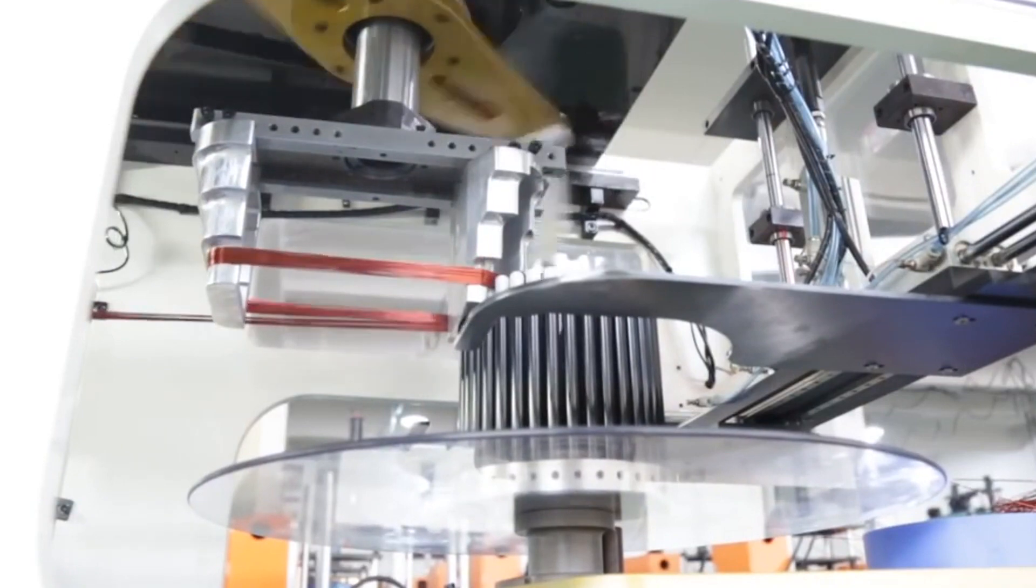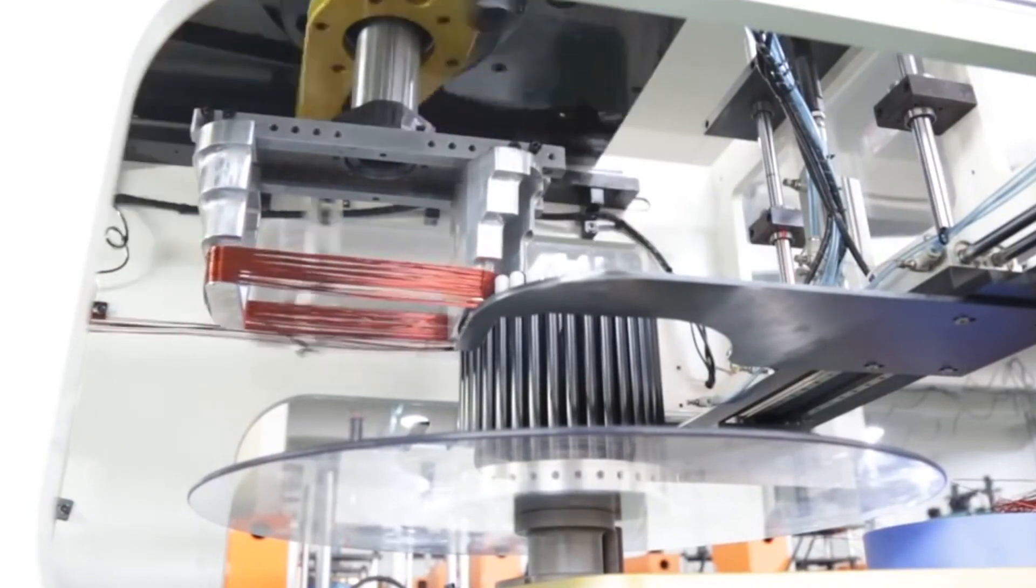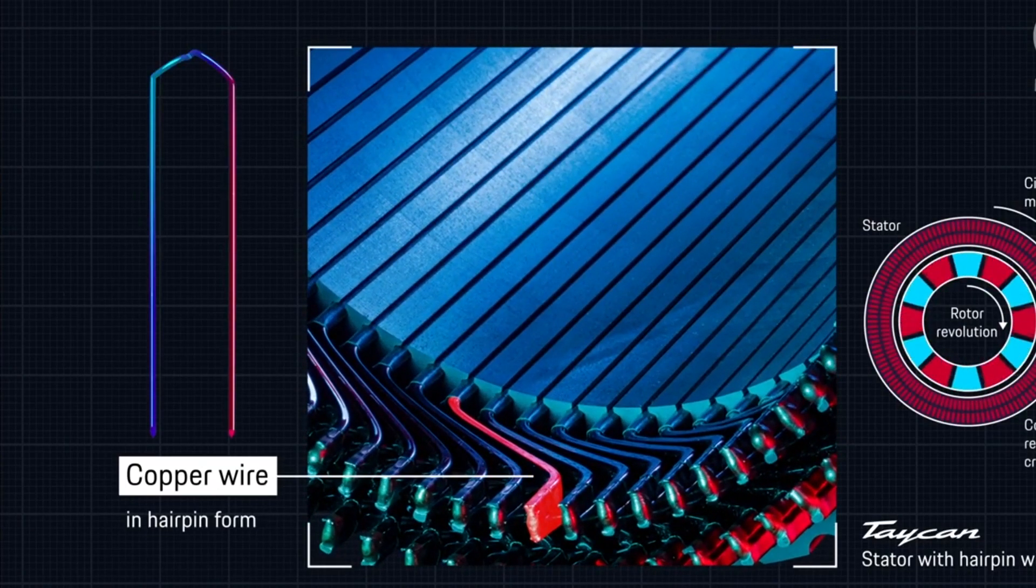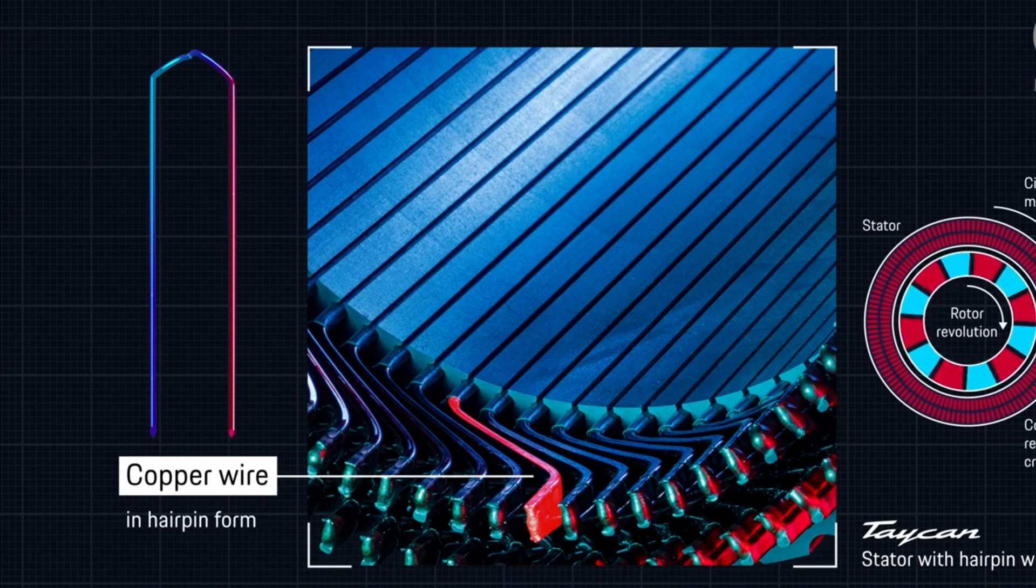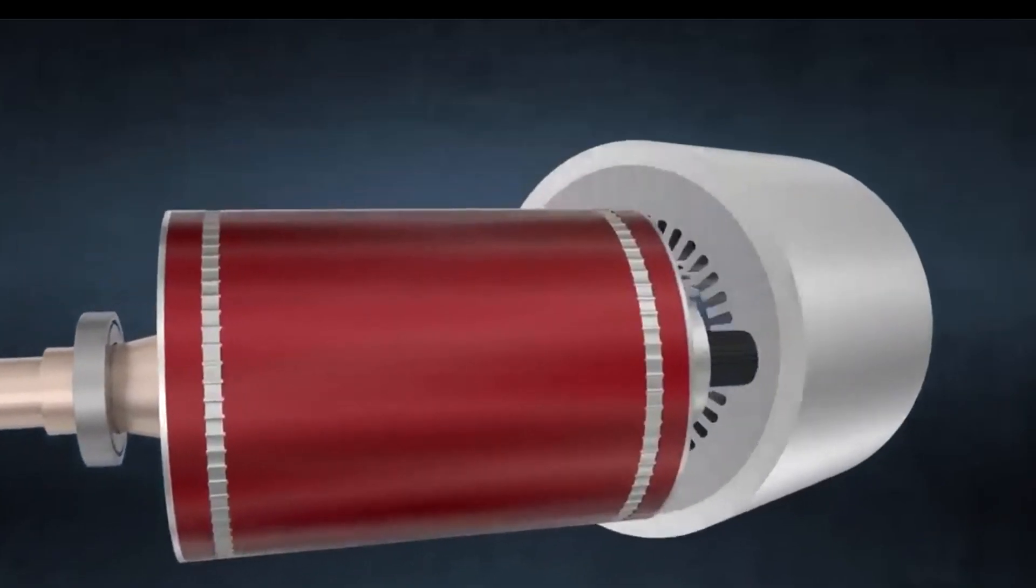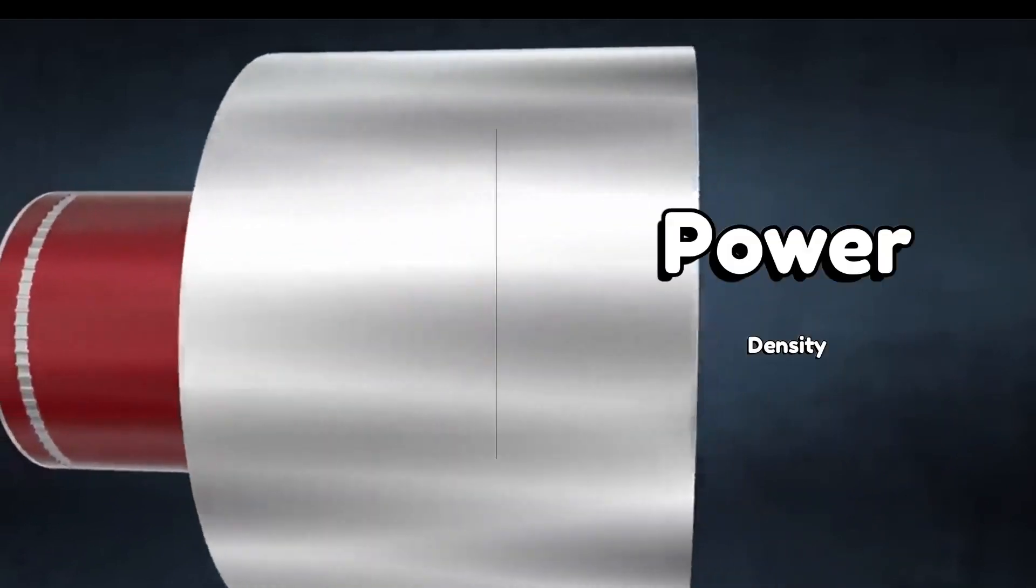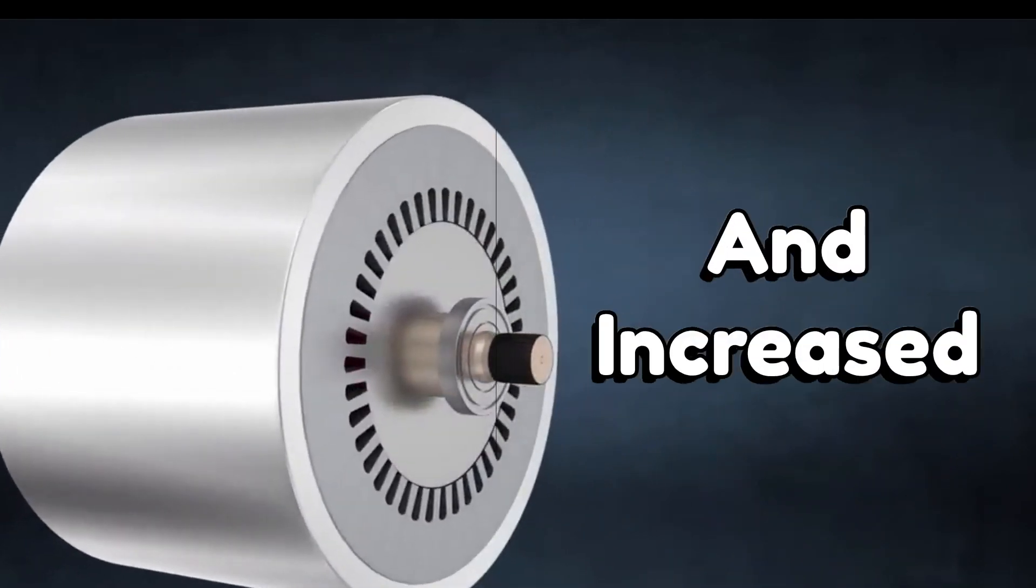Unlike conventional winding technologies, which use round wire coils, hairpin technology uses solid flat copper bars that are inserted into the stator stack. This creates a more efficient and compact design, resulting in improved power density, reduced weight, and increased reliability.